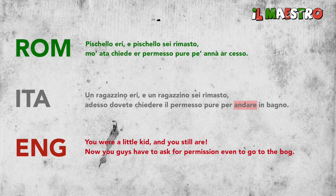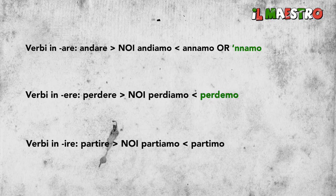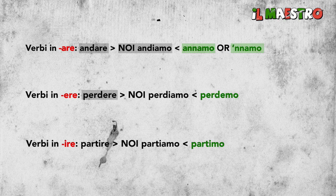It's worth mentioning that verb endings of the first person plural change: '-iamo' → '-amo' for -are verbs, '-emo' for -ere verbs, '-imo' for -ire verbs. For example: 'andare' — noi andiamo → 'annamo' or 'namo' in Romanesco; 'perdere' — noi perdiamo → 'perdemo'; 'partire' — noi partiamo → 'partimo.'